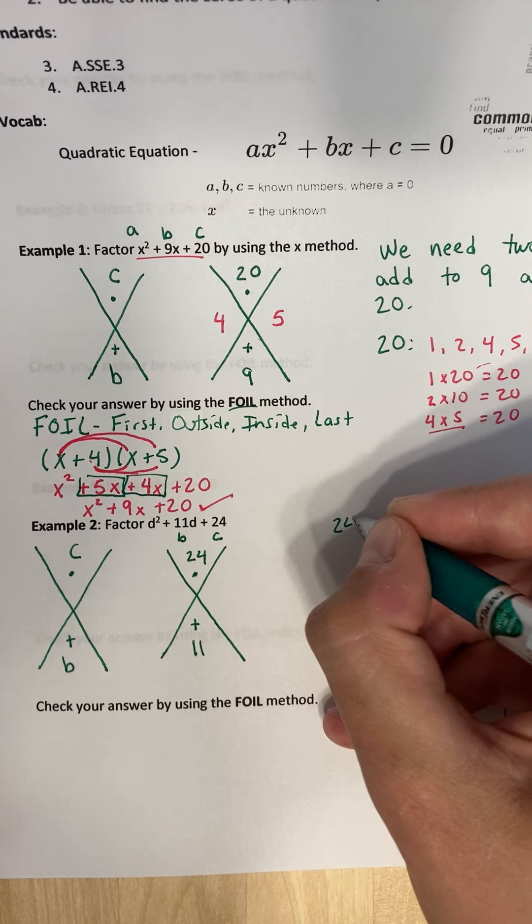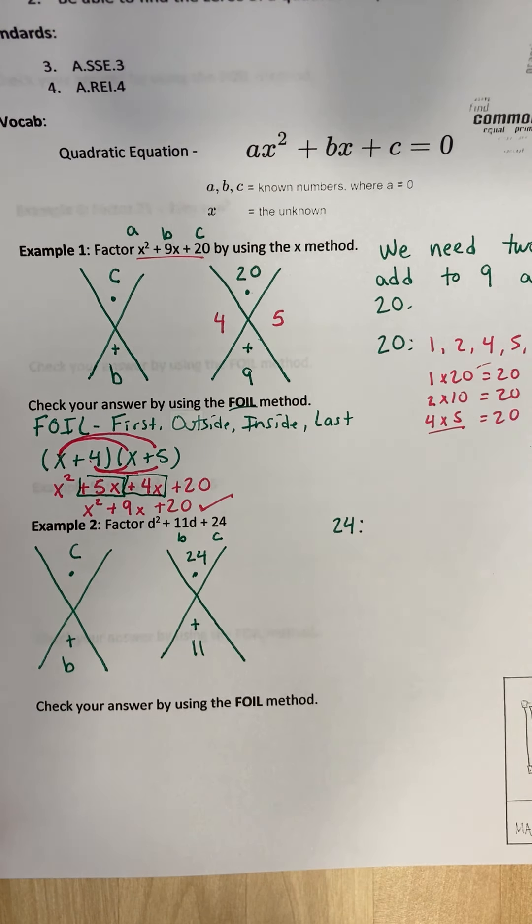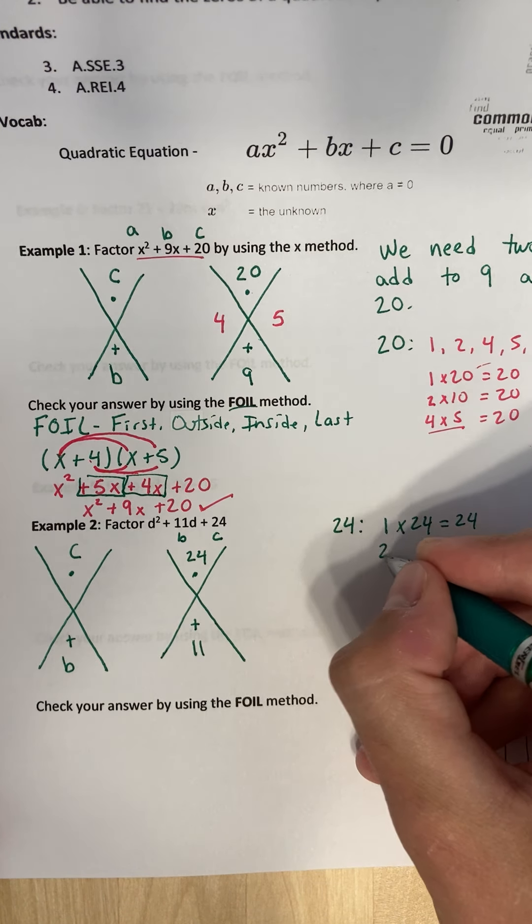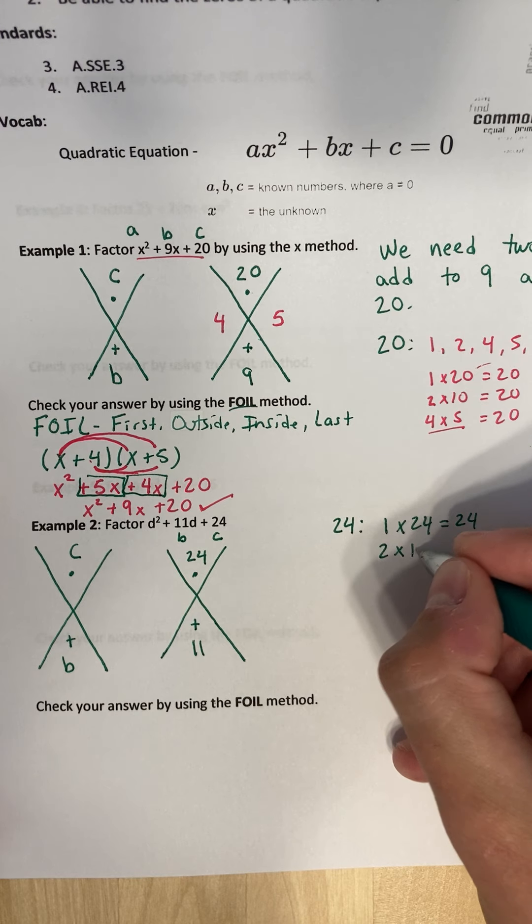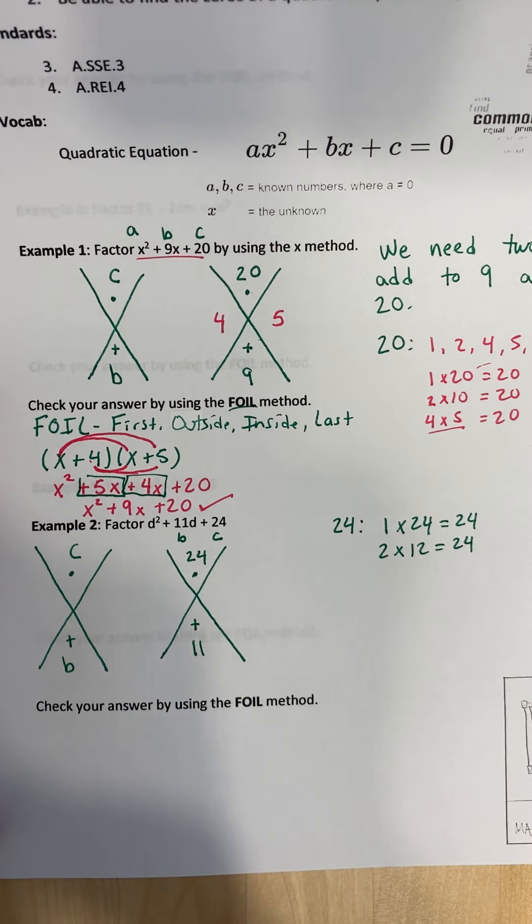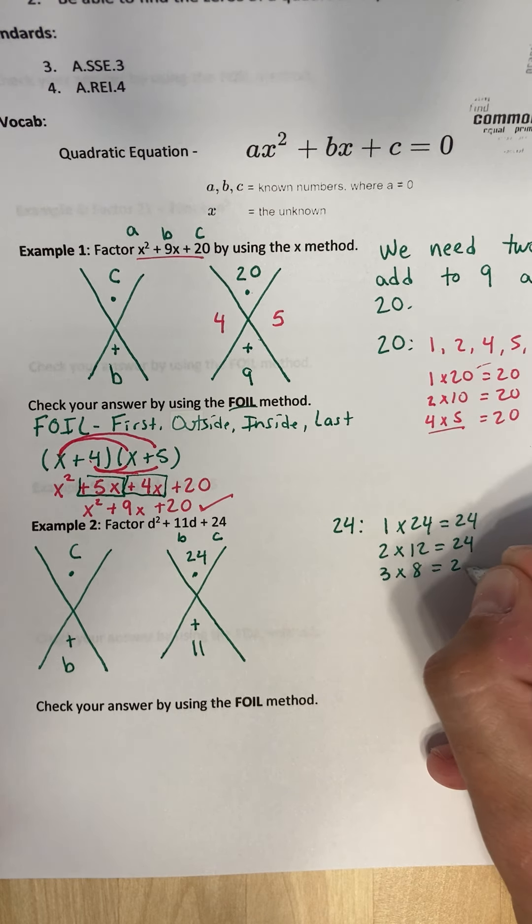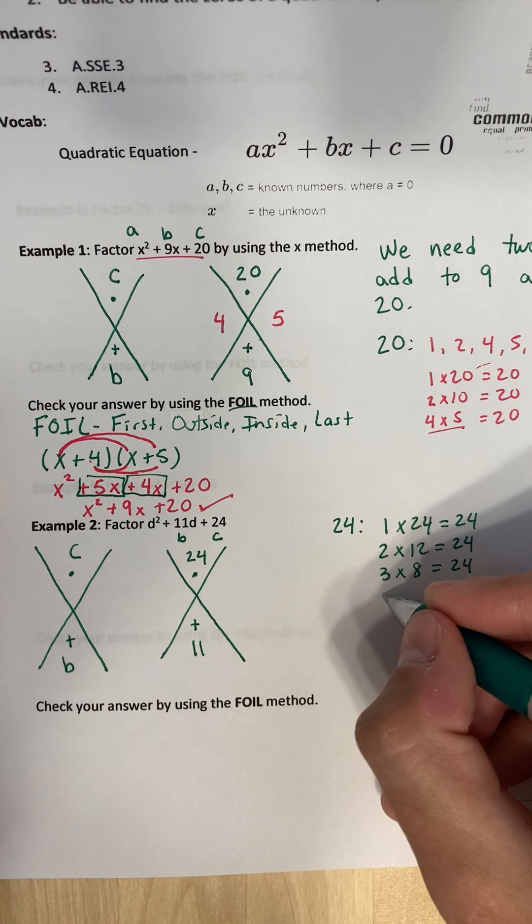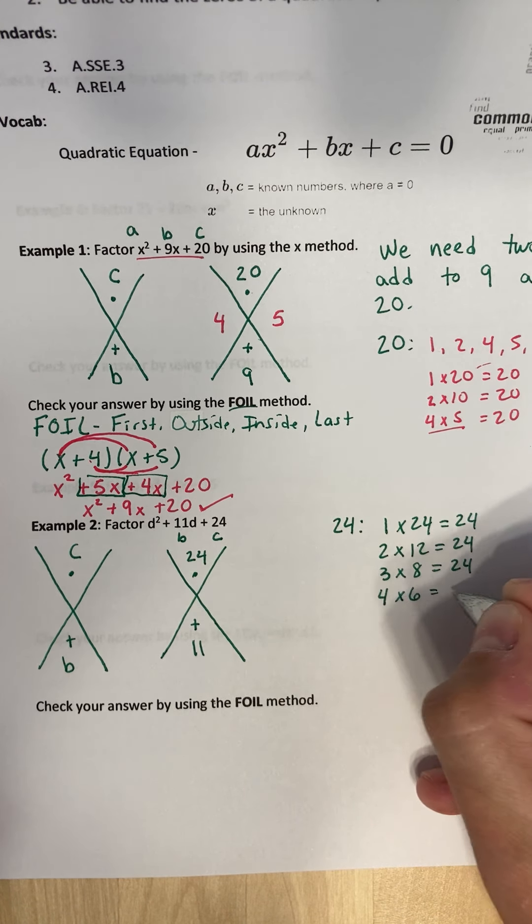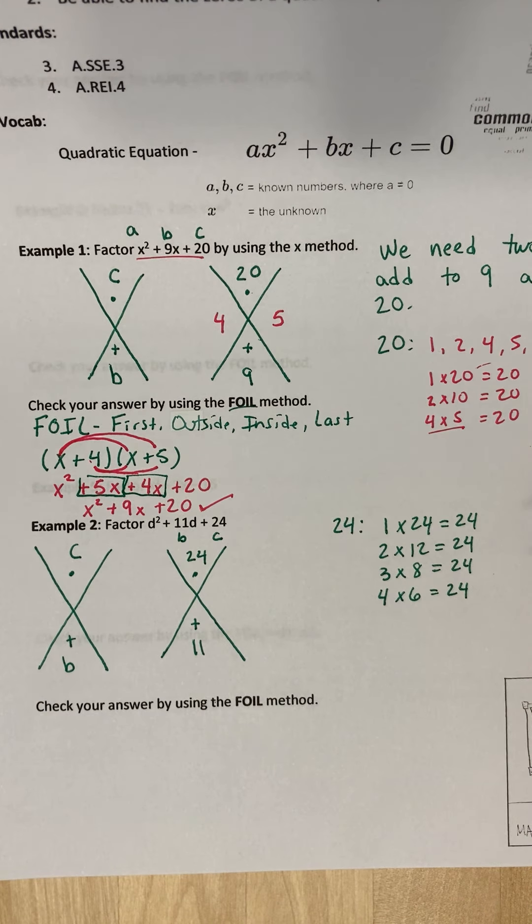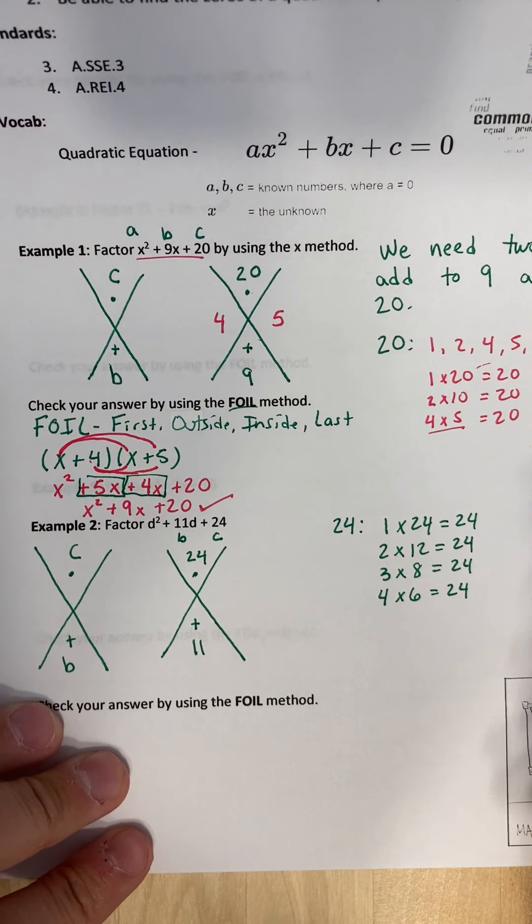So if you want, you can come over here to the side and do 24, all the factors of 24. So that would be 1 times 24 gives you 24. 2 times 12 gives you 24. What else goes on a 24? 3 times 8 gives you 24. 4 times 6 gives you 24. And that would be all the factors. So this would be all the factors going this way. So you'd have 1, 2, 3, 4, 6, 8, 12, 24. Those are all the factors of 24.